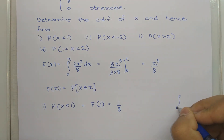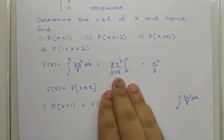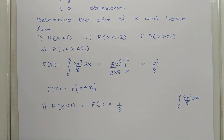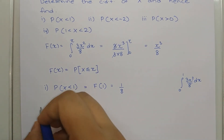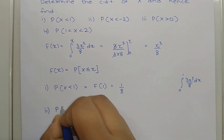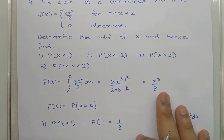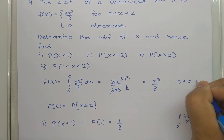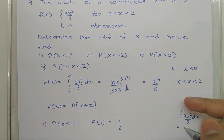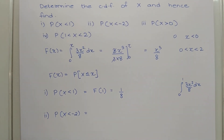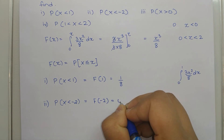The advantage of CDF is that we integrate once and substitute directly instead of integrating repeatedly for each probability. For P(X < -2): -2 is less than 0, so by the CDF definition, F(-2) = 0.